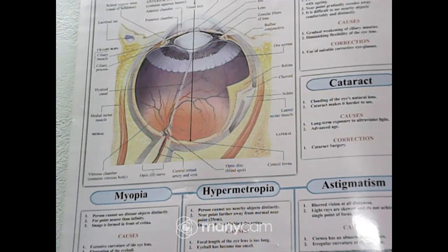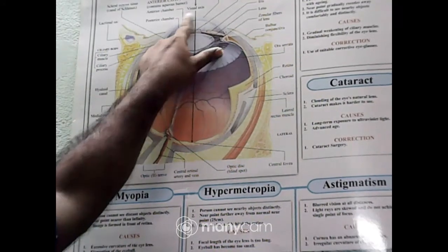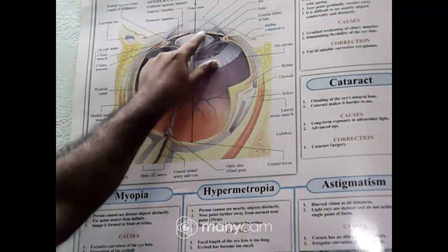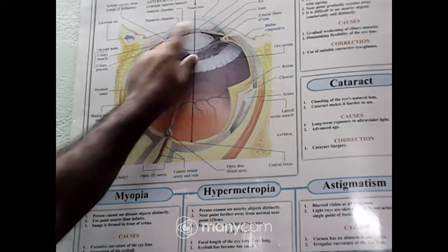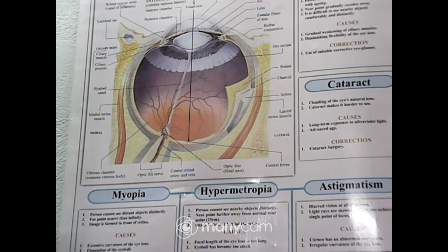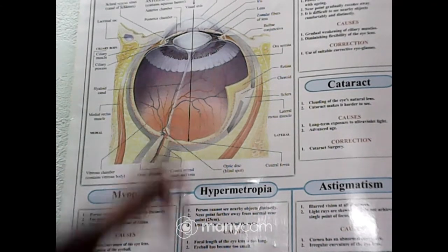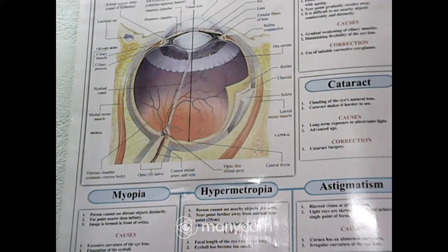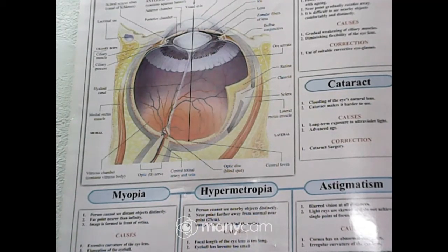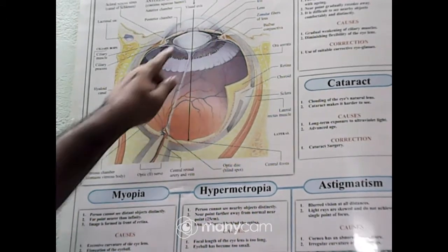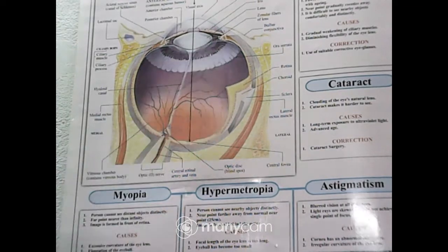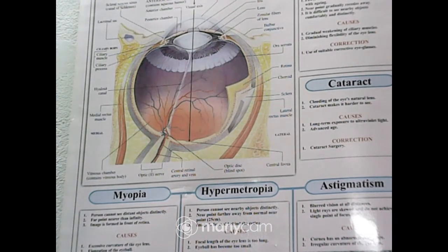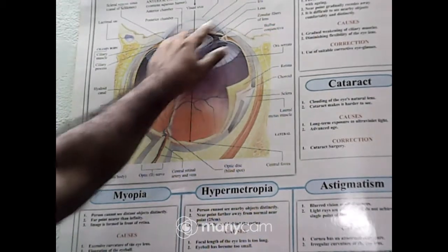The next part is iris. Just behind the cornea is the iris. Iris is the colorful part of our eye and it gives the distinctive color of human eyes. In the middle of the iris, there is a hole — that portion is known as the pupil.